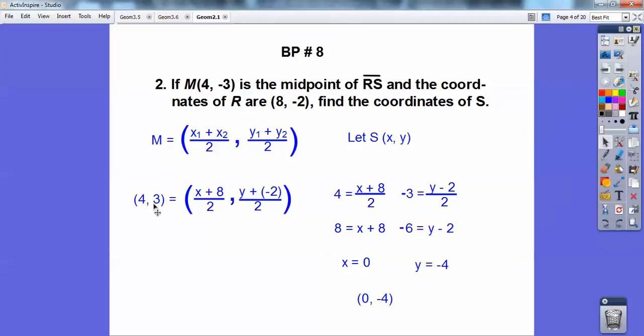Now 4 equals this stuff right here. So 4 equals x plus 8 over 2. Similarly, -3 equals this stuff, y minus 2 over 2. And then I multiplied both sides by 2 to get rid of that denominator. And I get 8 equals x plus 8, so x must be 0. Similarly, I multiplied both sides by 2 here and got -6 equals y minus 2. Then I plused 2 to both sides, and I get y equals -4. So the coordinate of S is (0, -4).